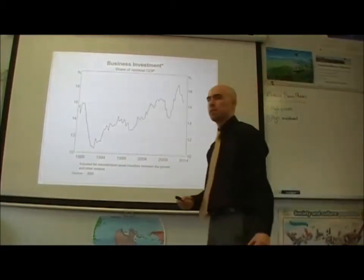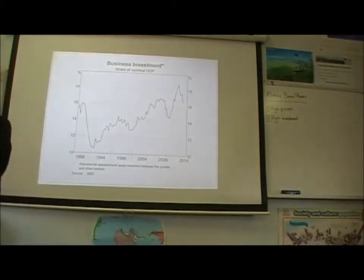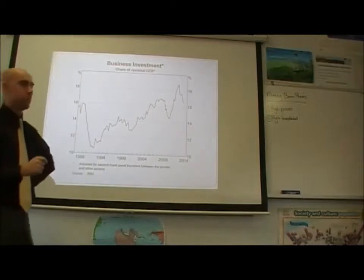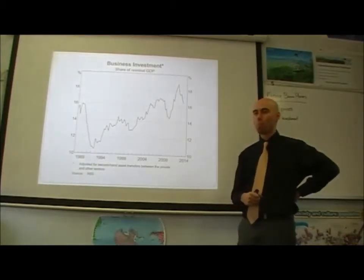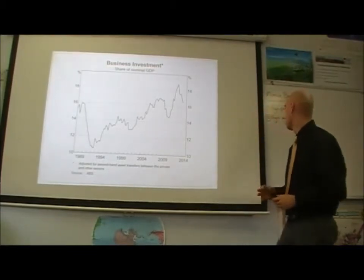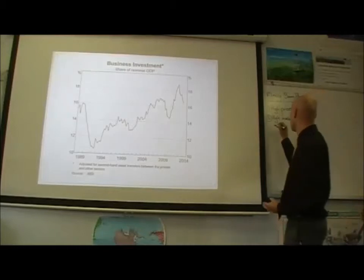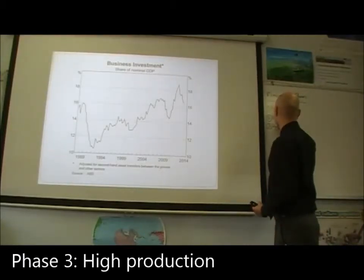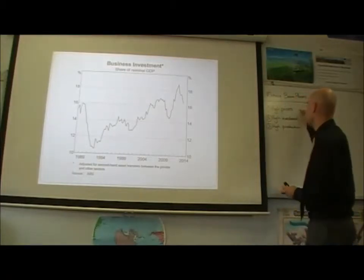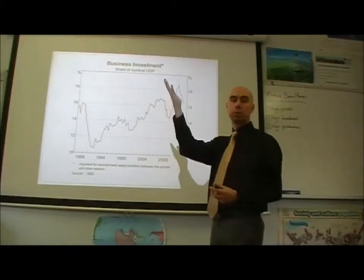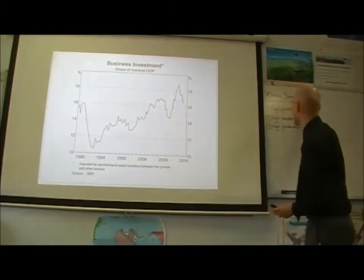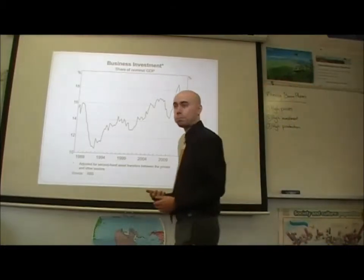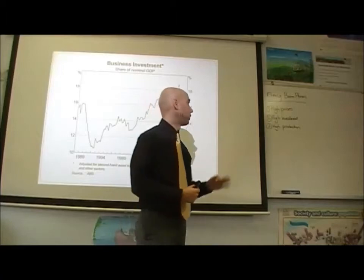What happens after you put all that investment in? You produce more. Why? Because you have more capacity. Increased capital gives you additional capacity, and that additional capacity means you have extra production. So the third phase is high production. If you look at a supply and demand curve, this is exactly what happens when the price mechanism comes into play: prices go up, suppliers want to supply more, and to do it they need high investment in order to achieve that high production. Those are the three phases of the mining boom.